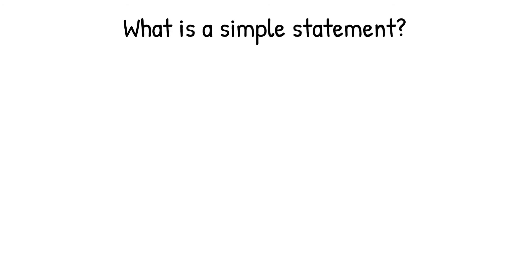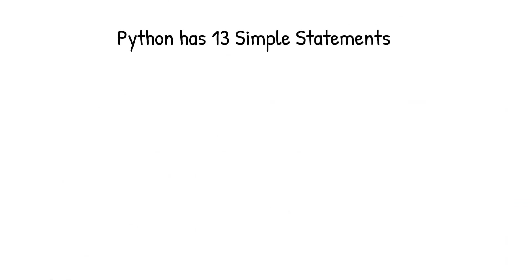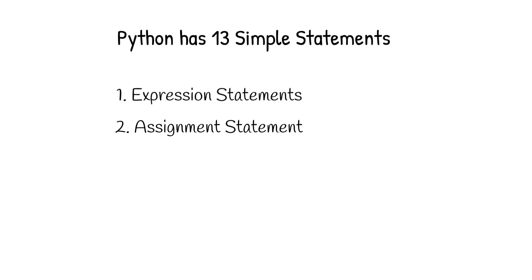Let us first look at simple statements. Every single logical line in a Python source file is known as a simple statement. There are 13 different statements in the simple statements category, but I will talk about two important ones in this video — the rest are related to reserved keywords and will be covered in future videos. The two simple statements we will discuss are: first, expression statements, and second, assignment statements.